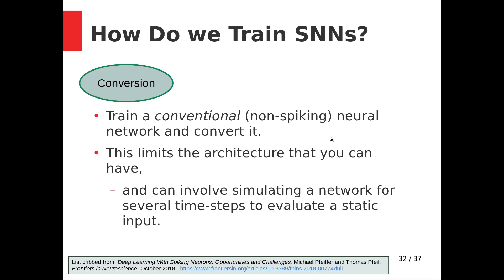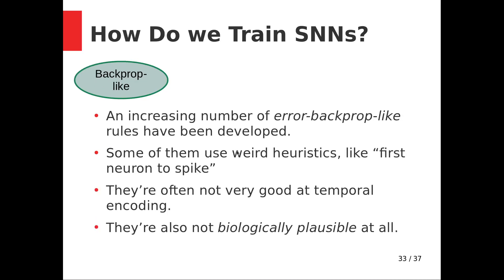There are also backprop-like rules — algorithms that try to carry information back from an output layer to previous layers in a backpropagation-like scheme. One approach basically ignores the spike: it drops the spiking component, takes the derivative of the non-spiking voltage, treats that like an activation, and does something backprop-like. There are a few other schemes; some just track which output neuron spikes first — 'first to spike' rules. These are not very good at temporal encoding either.